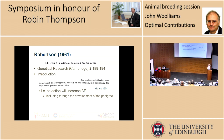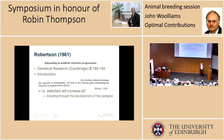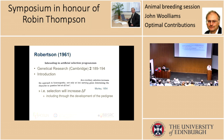In the introduction, Robertson notes some things going back to 1954. The approach he attributes to Morley says, as a corollary, selection increases the approach to homozygosity not only at loci carrying genes determining the character in question, but at all loci. What that's saying is that selection will increase delta F. More precisely, it's saying that through the development of pedigree alone, the pedigree will develop differently and you will increase delta F. That was an important point being made at the time.